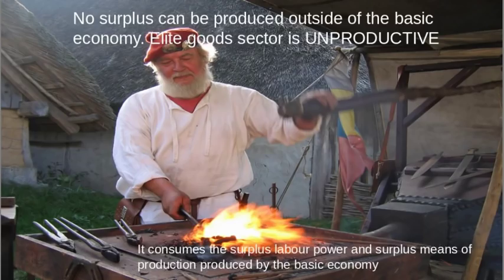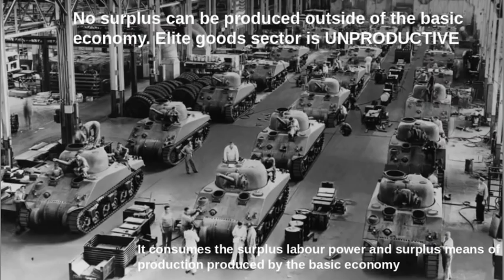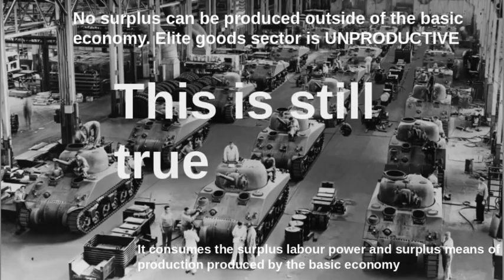I'm showing that in a reconstruction of a medieval village, but the same thing holds true. No surplus can be produced outside the basic economy. The elite goods sector, which includes arms production, is unproductive — it still consumes the surplus labour and surplus means of production produced in the basic economy. This basic point doesn't change as you move from feudalism to capitalism.